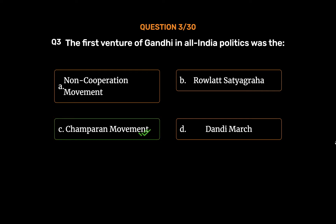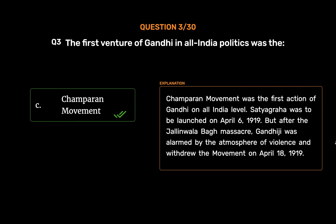Champaran movement was the first action of Gandhi on all India level. Satyagraha was to be launched on April 6, 1919. But after the Jallianwala Bagh massacre, Gandhiji was alarmed by the atmosphere of violence and withdrew the movement on April 18, 1919.